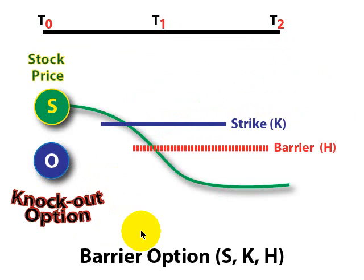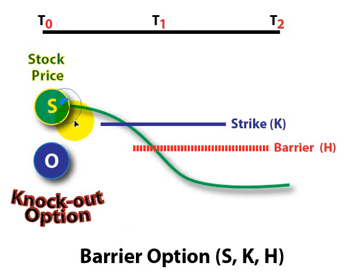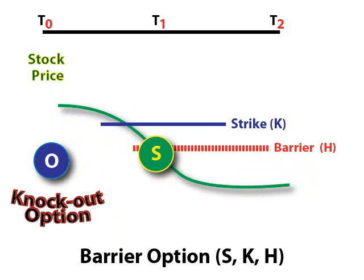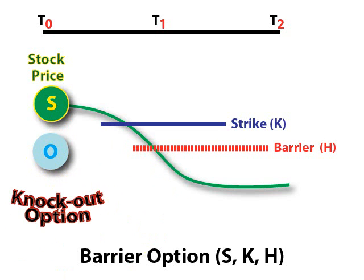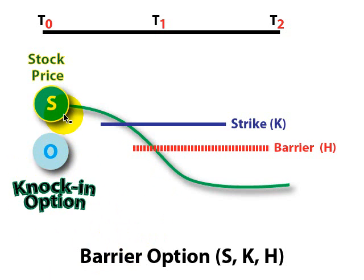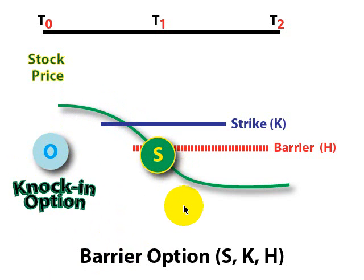Those were examples of up-and-in and up-and-out barrier options. We can also have down-and-in and down-and-out variations of barrier options. In the case of a down-and-out option, if the stock starts here and goes down and breaches the barrier, the option gets knocked out of existence. On the other hand, we could have a down-and-in option such that if the stock goes down and breaches the barrier level H, the option is knocked into existence.